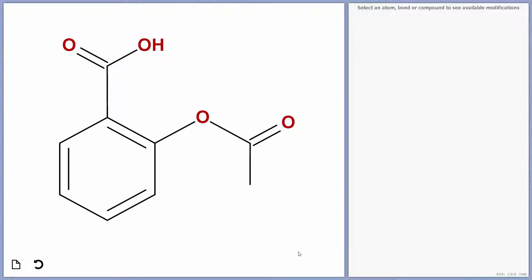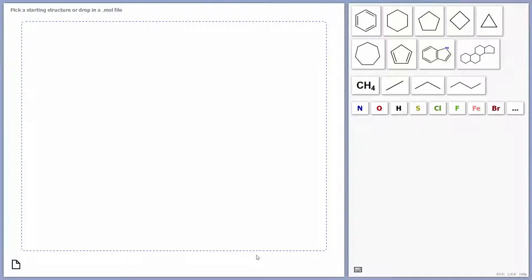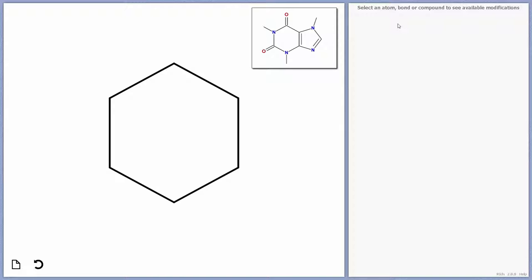I could have easily pasted in a mol file or SMILES string, but in this case, it's very quick to draw with just seven clicks. Next, I'm going to move on to something slightly more complex, caffeine. Again, I'm going to start by picking a ring, in this case cyclohexane.